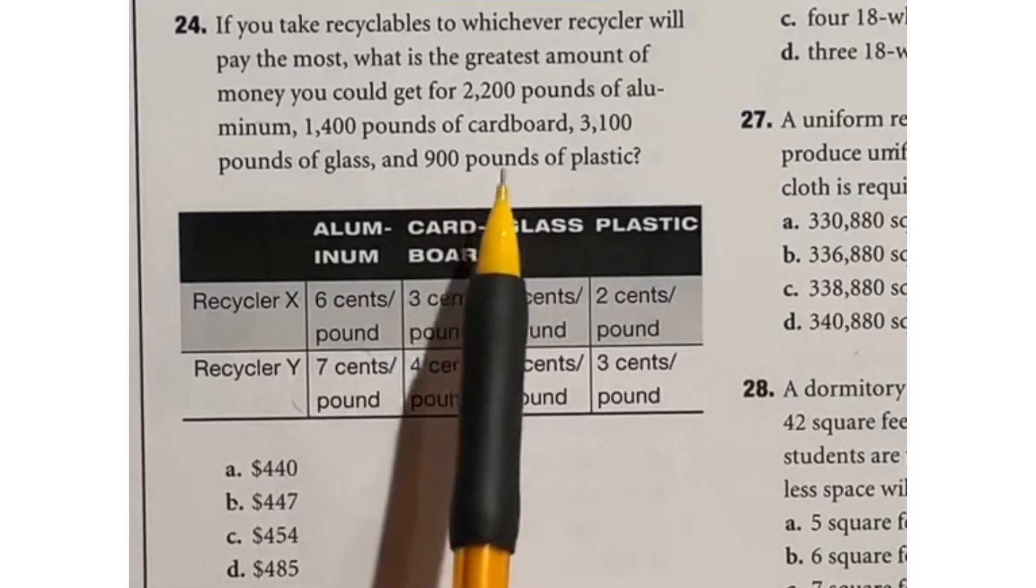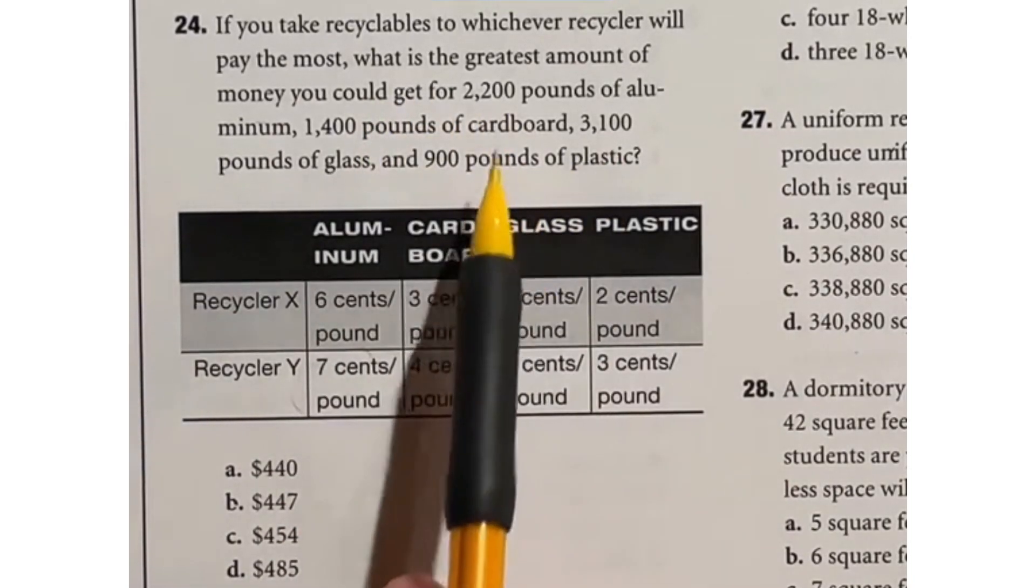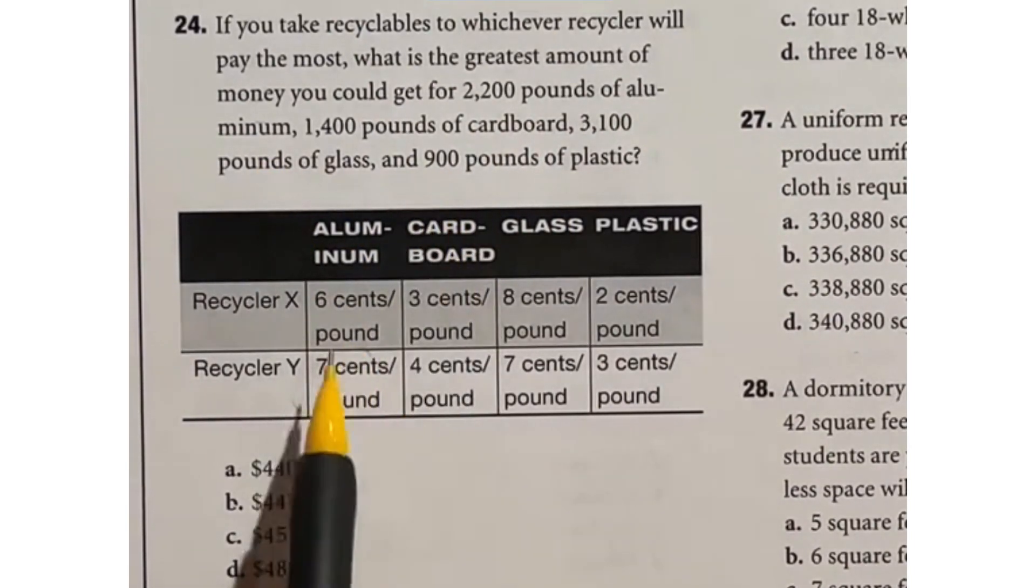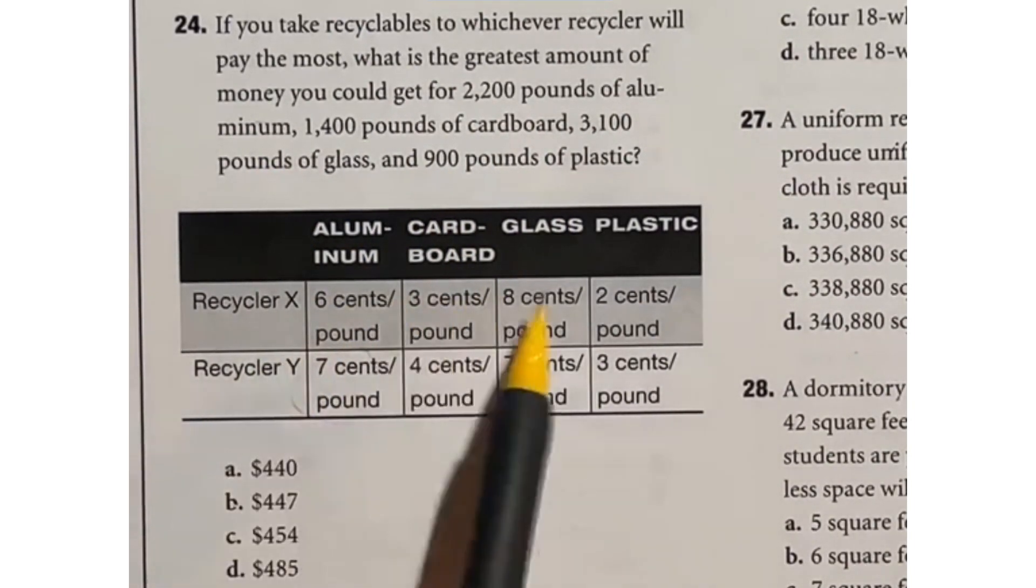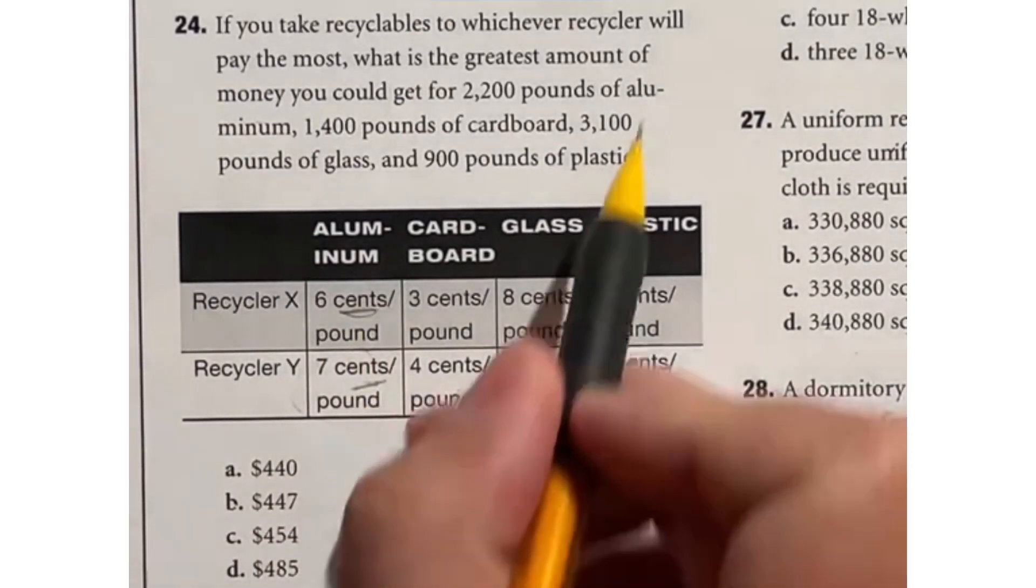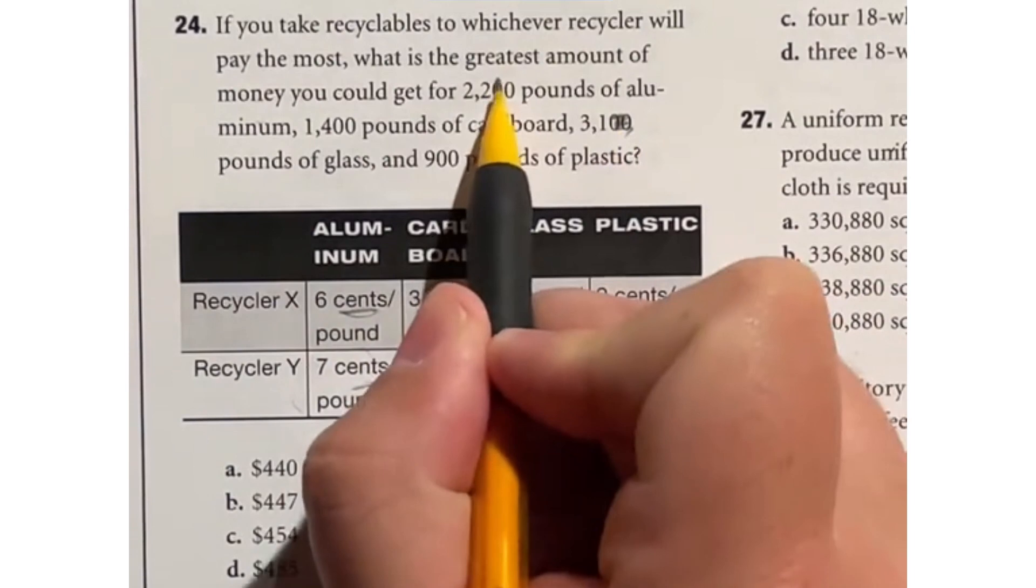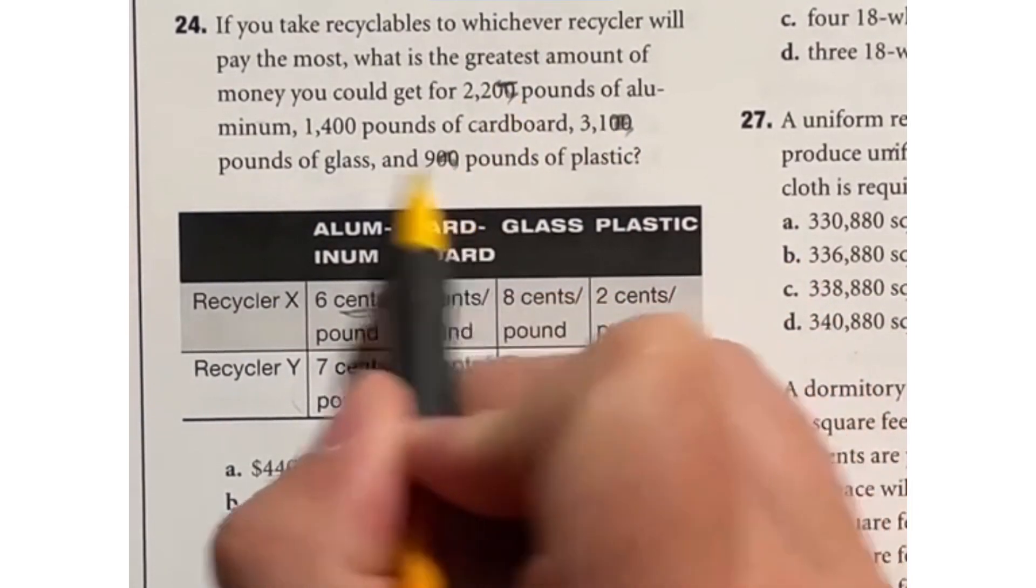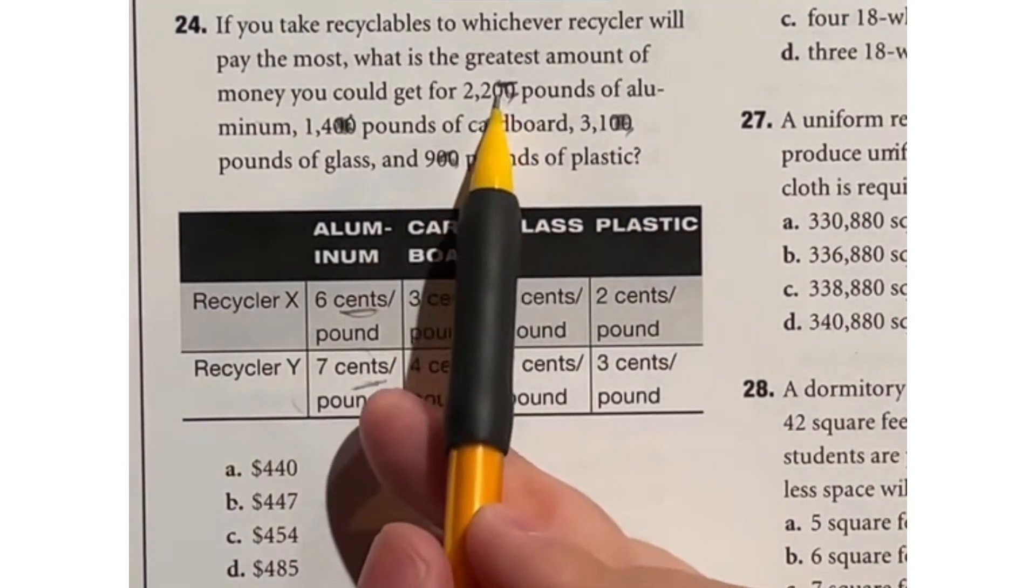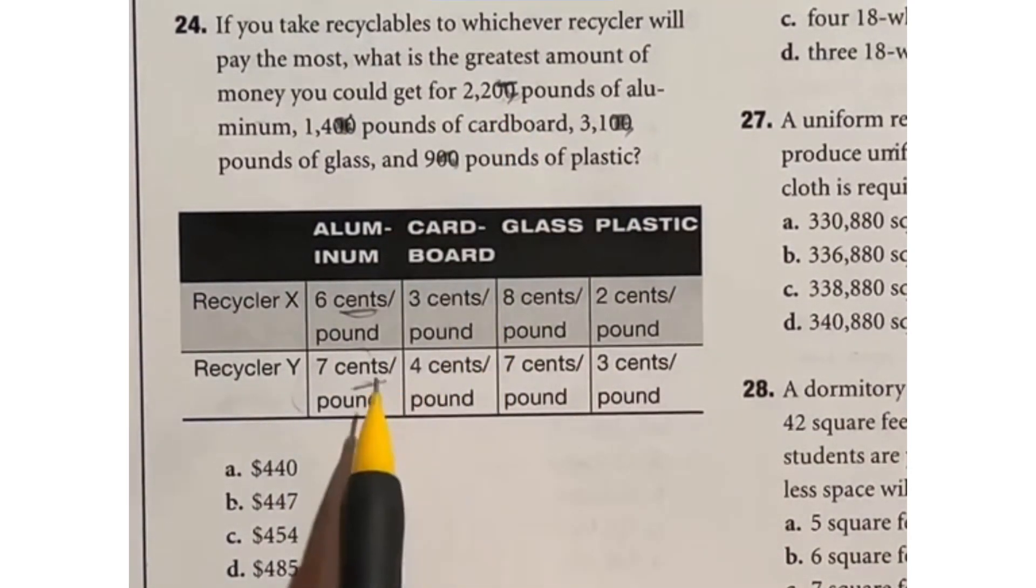24 again is just a lot of work here. We're looking at recycling. These are the number of pounds of each item that we have. We're going to take them to whoever pays us better out of these two for each item and we have to find out the total amount. Because all of these are in cents the first thing I'm going to do is divide all of these by 100 to get us into dollars instead of cents and it's also going to give us smaller numbers to work with. Remember dividing by 100 you can just remove the two zeros moving the decimal over to the left twice.